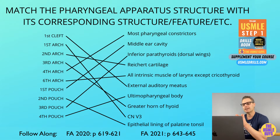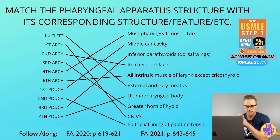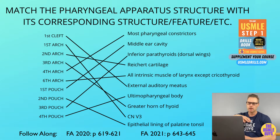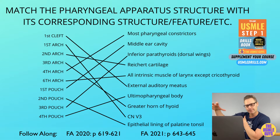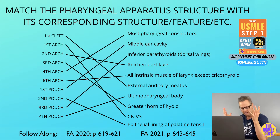Let's look at the pharyngeal apparatus. This is made of the pharyngeal clefts, the arches, and the pouches. From the outside moving in, they go in that order: cleft, arch, pouch — the mnemonic CAP. A handy little mnemonic in case you get a simple anatomy question and your brain just doesn't want to work. Remember CAP, from outside in: cleft, arches, pouches.